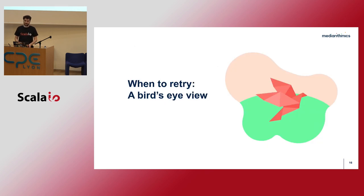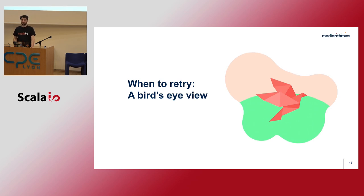When should you use cats-retry? If you're familiar with ZIO or Monix, they already provide abstractions for retrying, so if all your code is based on one of those IO monads, you probably don't need cats-retry. Where cats-retry really shines is with cats-effect IO, which doesn't provide those abstractions, and also when you're using tagless final techniques or when you have different IO monads in your codebase and still want to share retry policies across frameworks.